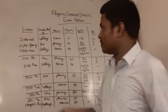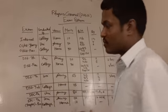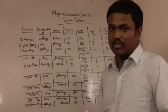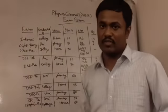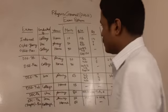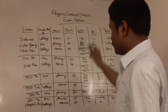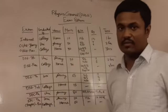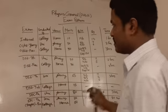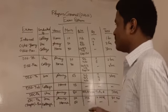So in today's video, this is going to be a bit more specific. This is going to be mostly on the exam pattern of the physics general degree, and there are roughly six categories on which the exams are divided into.